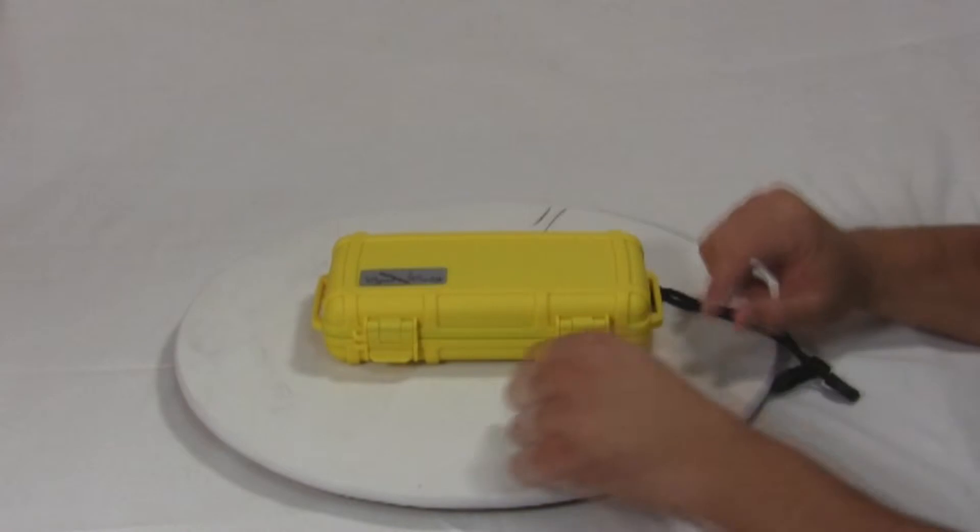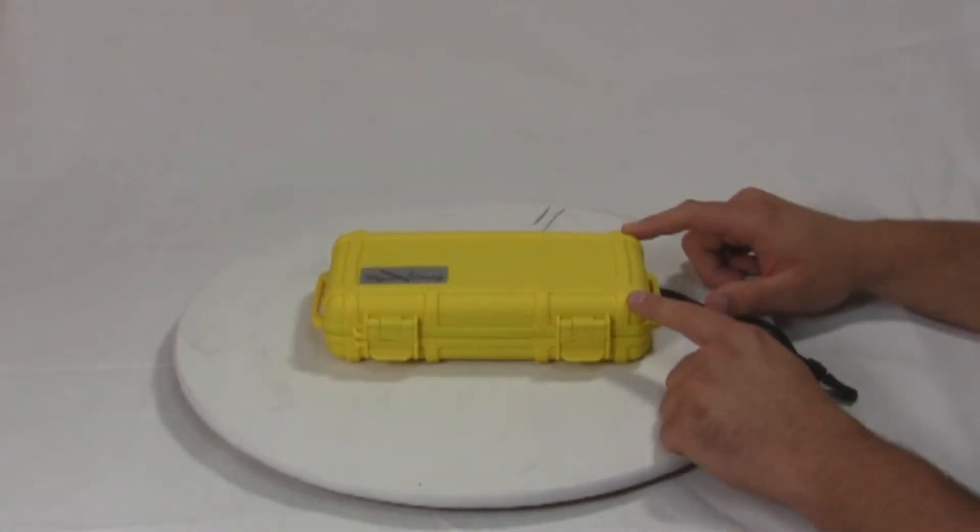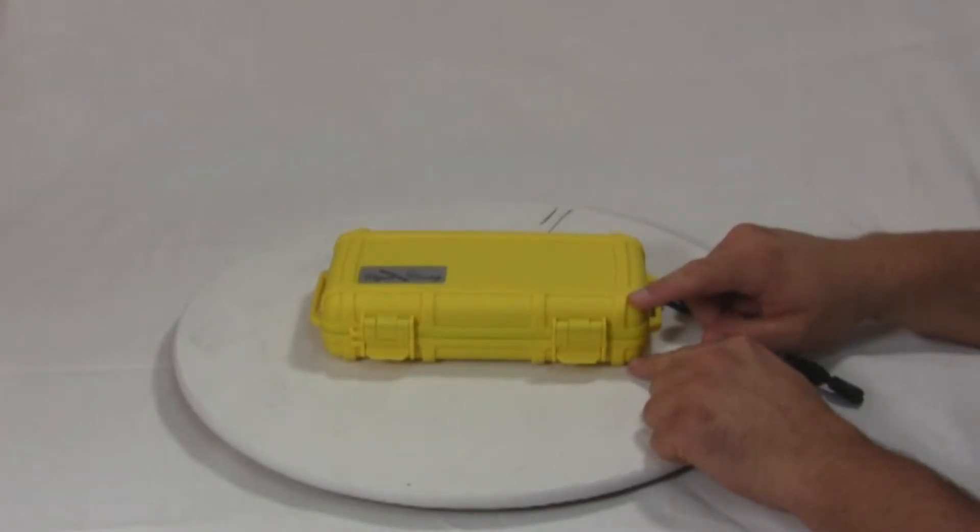This humidor measures 7 and 7/8 inches wide, 3 and 3/16 inches deep, and 1 and a half inches tall.